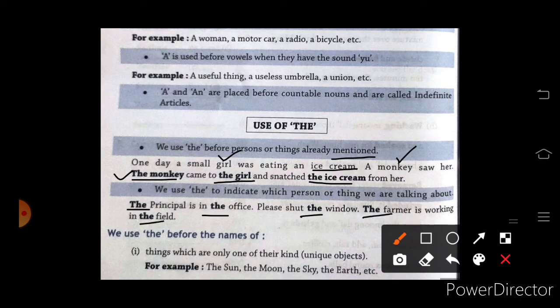Now, we use the before the names of things which are only one of their kind. Matlab, unique objects ke saath. Like, the sun, the moon, the sky, the earth. Jo humein nature mein already mil hai aur jo unique hai.